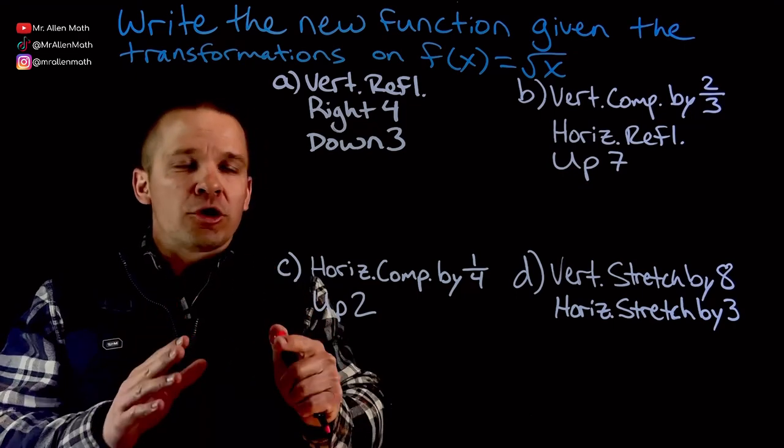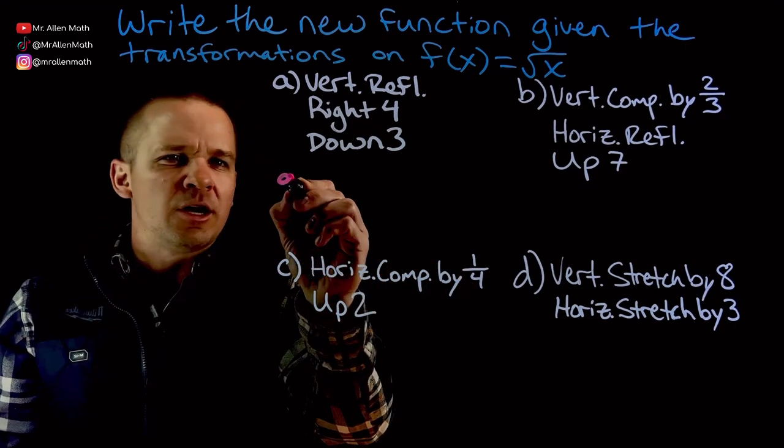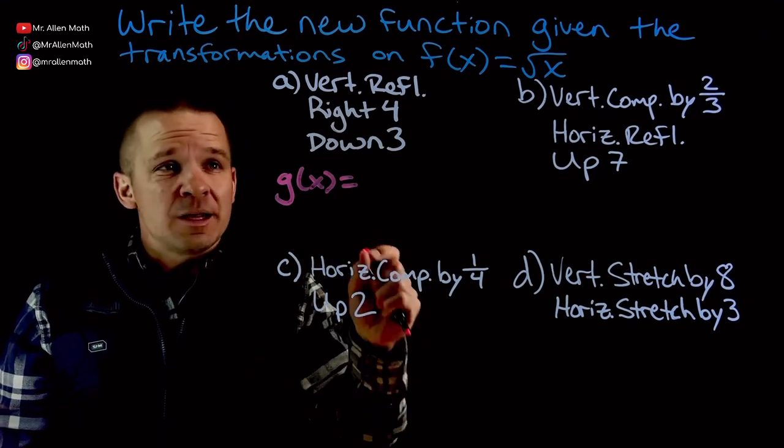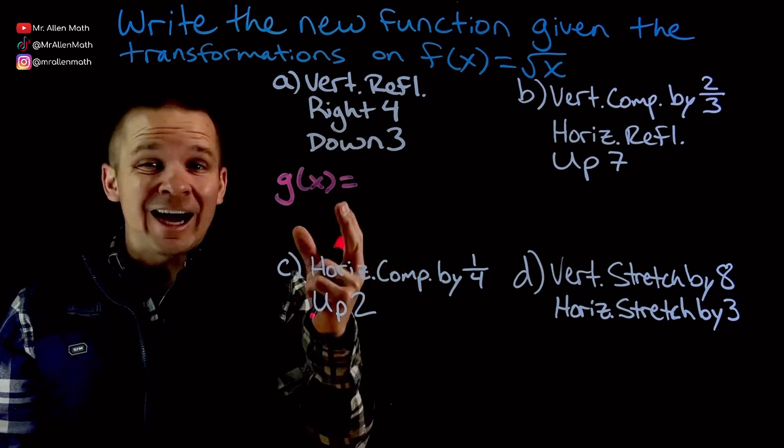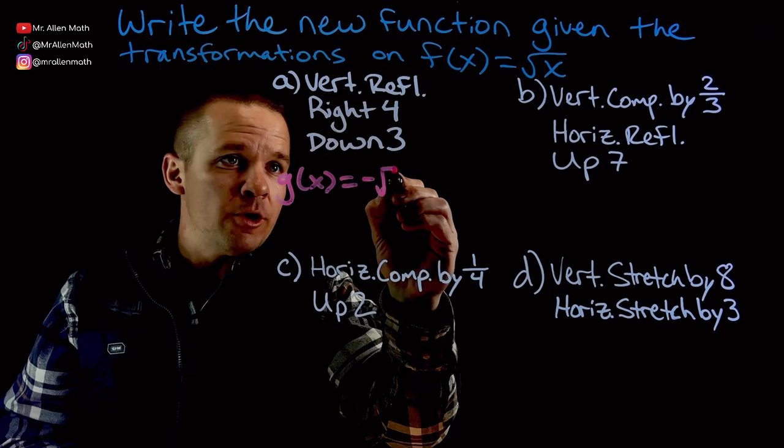So first one here, we have a vertical reflection. We're going to write the new function, g of x. We have a vertical reflection, so that's going to be a negative located outside of the function, outside the square root. So I'm going to have negative, then a square root.